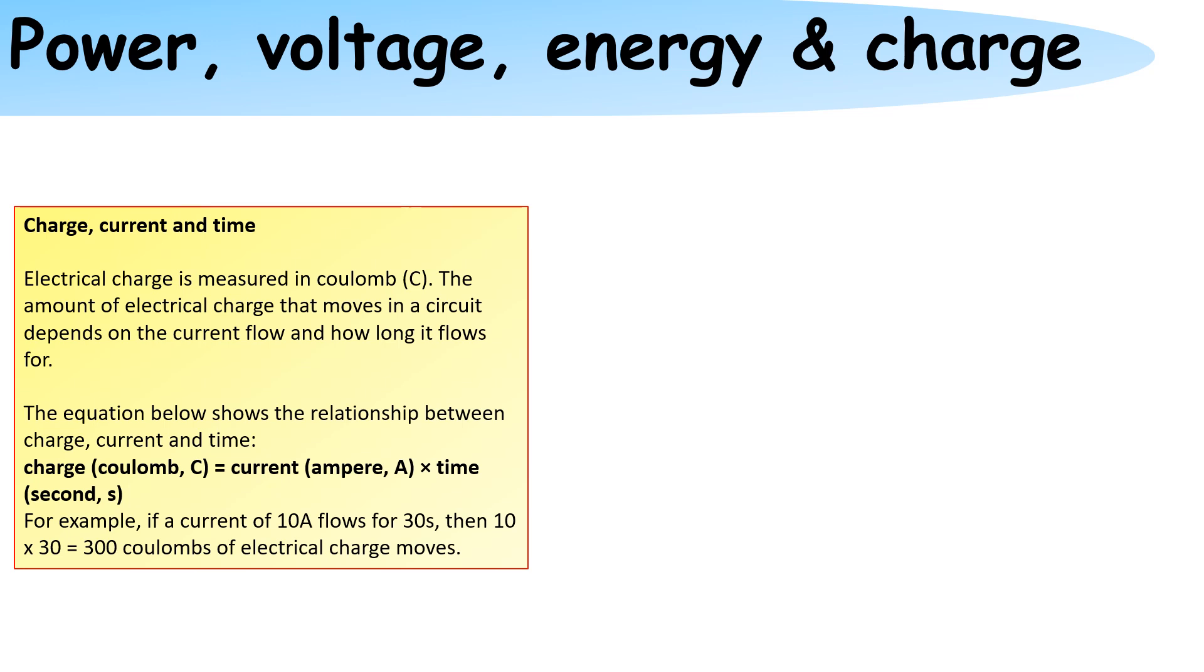Electric charge is measured in Coulombs. The amount of electric charge that moves into a circuit depends on the current flow and how long it flows for. So the equation for it is that charge is equal to current times by time.